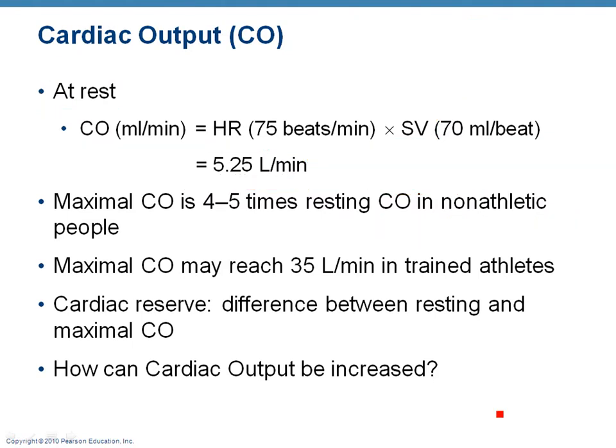Interestingly, every minute your heart is pumping 5.25 liters of blood out of the ventricles — that's about the same volume of blood present in an average adult. So every minute, all of the blood in your body is passing through your heart one time if you are at rest. Think about the journey of blood through your body — through all those microscopic blood vessels, the little tiny capillaries, back into the venules and veins and returning to the heart. All of your blood makes that full journey every minute. That's pretty remarkable.